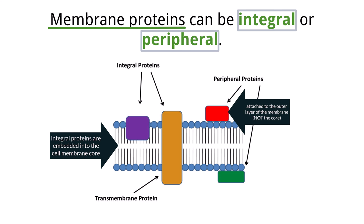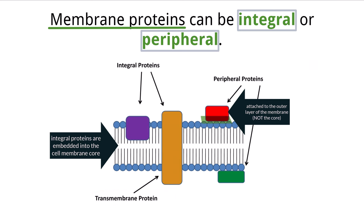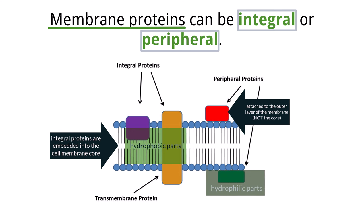We can see that integral proteins can be attached to one lipid layer, or attached to both lipid layers going all the way through — which we call transmembrane proteins because they extend all the way through the cell membrane. A peripheral protein is attached to the surface of the membrane. Integral proteins contain at least one structural part that is hydrophobic, giving them the ability to interact with the nonpolar cell membrane core, where peripheral proteins are generally all hydrophilic and their polar properties are repelled by the cell membrane core, which is why they cannot sit within the membrane.